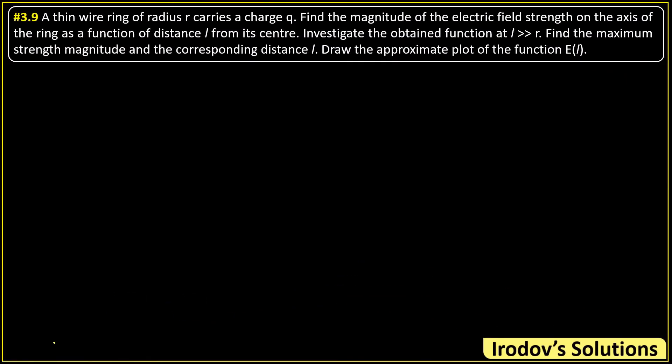Let's look at question 3.9 of Irodov. The question states: a thin wire ring of radius r carries a charge q. Find the magnitude of the electric field strength on the axis of the ring as a function of distance l from its center. Investigate the obtained function at l much larger than r, find the maximum strength magnitude and the corresponding distance l, and draw the approximate plot of the function E(l). This is a very standard problem whose result we directly use at the IIT-JEE level, so here we have to derive those results.